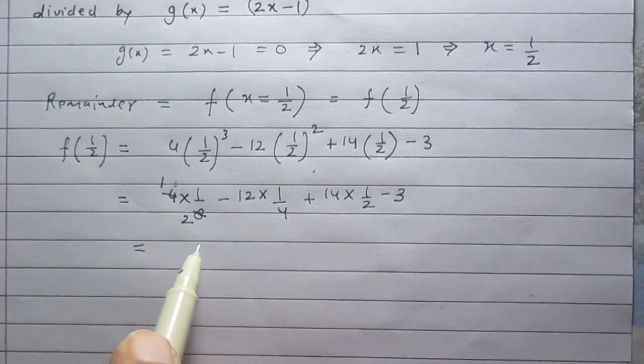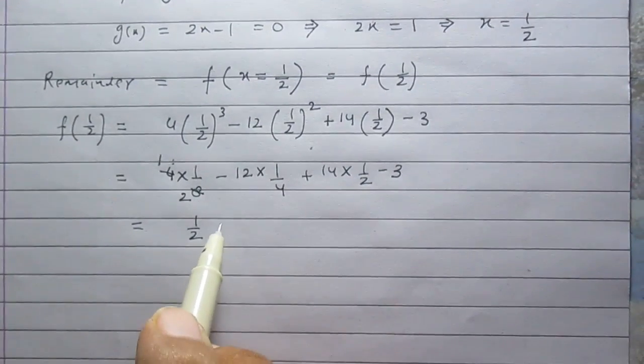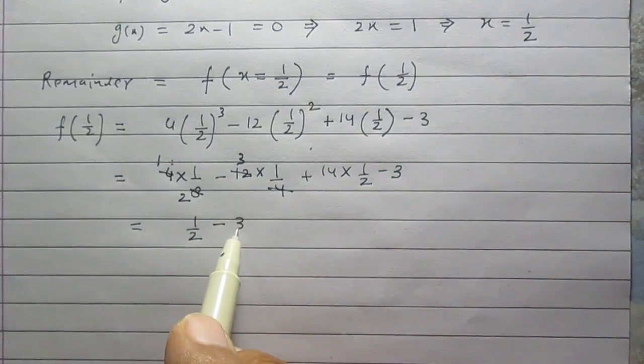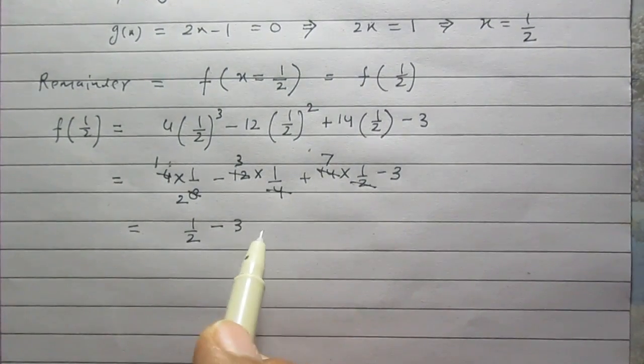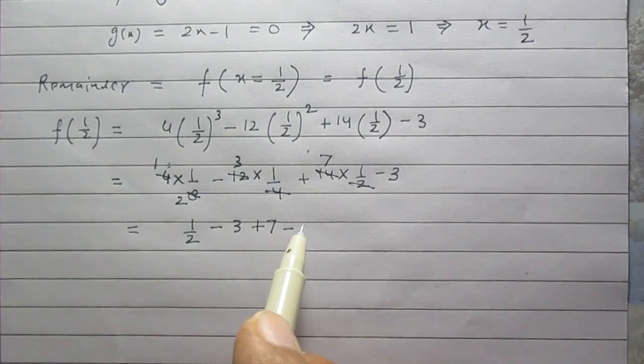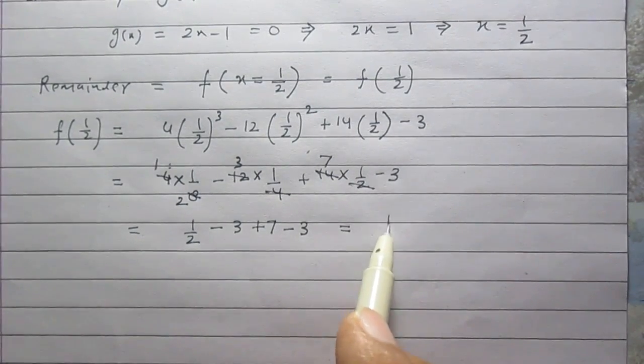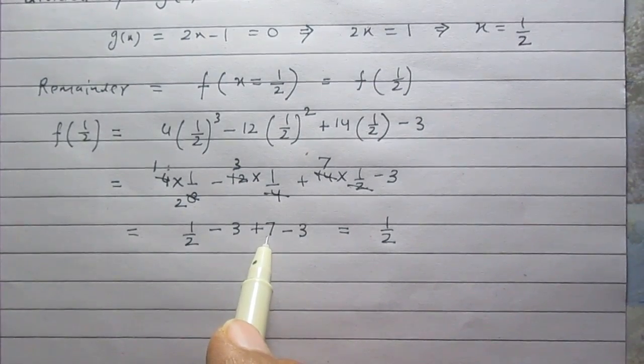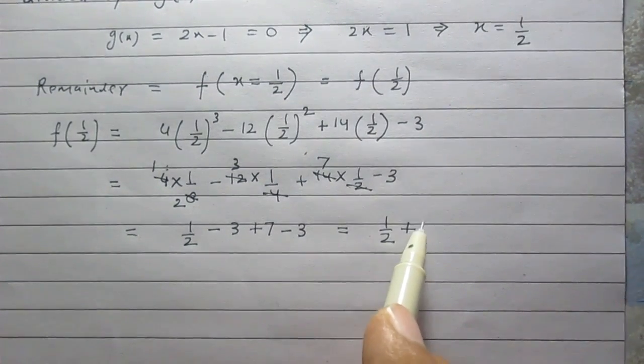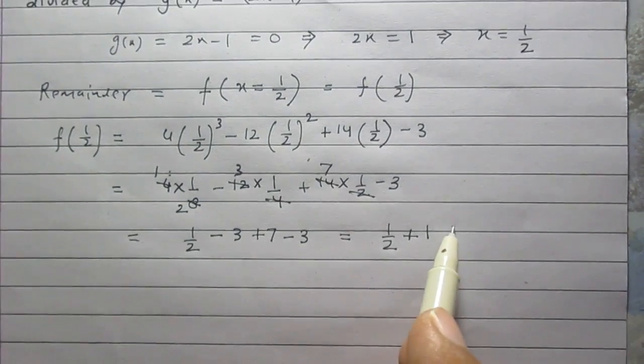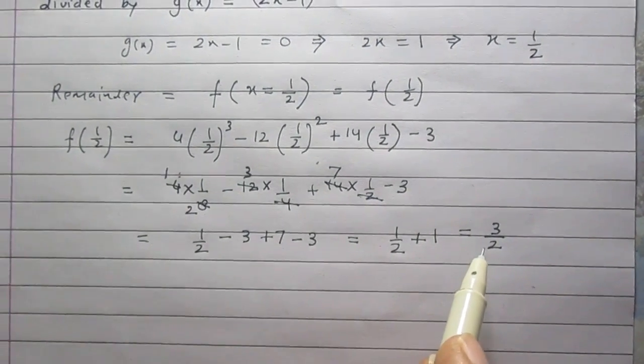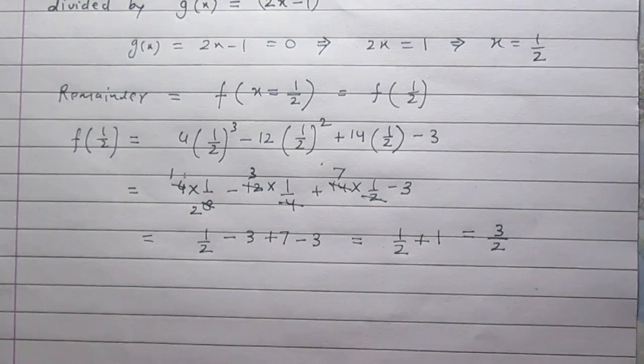So the result is 1/2 minus, 4 threes are 12 so it is minus 3, 2 sevens are 14 plus 7 then minus 3. It is 1/2 minus 3 plus 7 is 4 and 4 minus 3 is 1. So 1/2 plus 1 is 3 divided by 2 or 3/2. So the remainder is 3/2.